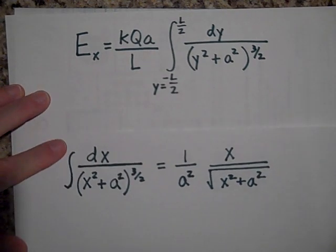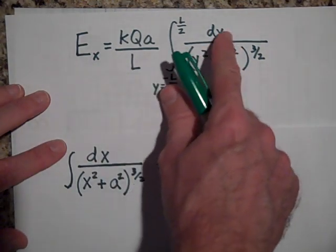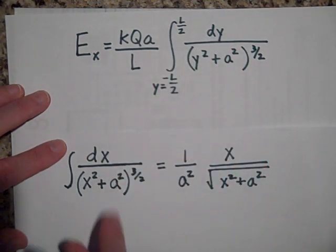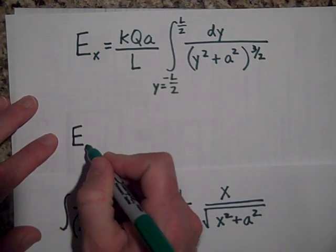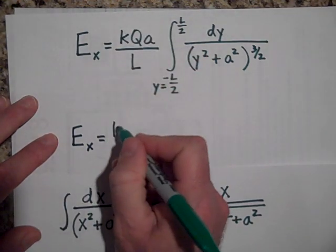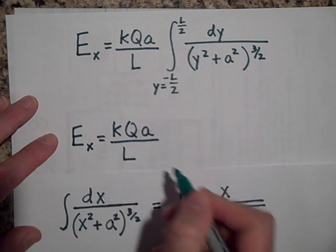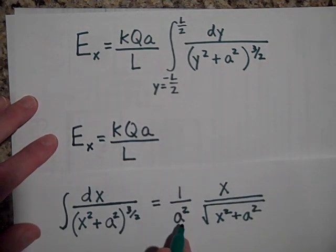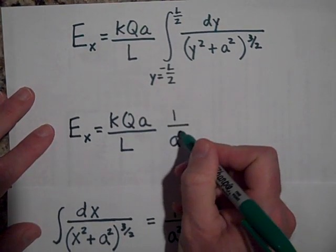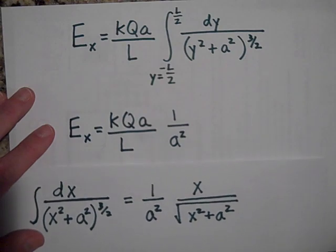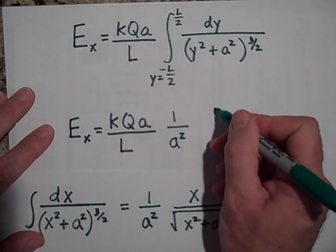So let me go ahead then and solve for this. It turns out that the differential they're using is dx, so that's the variable. Their variable is X, my variable is Y, but my constant is A and so is their constant. So I'm going to just write down the solution to this integral. Ex is, I'm going to first put all my constants here, kQa over L.